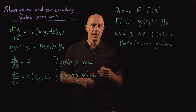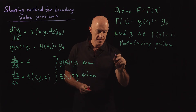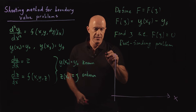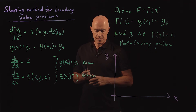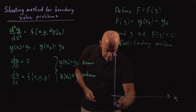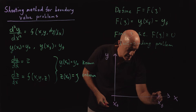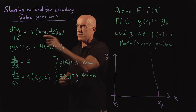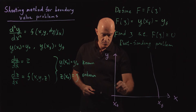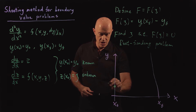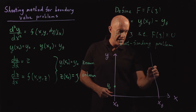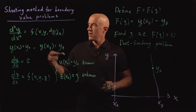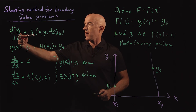Let me draw a picture to make this clearer. Here's the x-axis and y-axis. We place x0 on the left and xf on the right, drawing a vertical line at xf. We know two values: y(x0) = y0 at the left boundary, and y(xf) = yf at the right boundary. That's the two-point boundary value problem, and y(x) must satisfy the differential equation throughout.